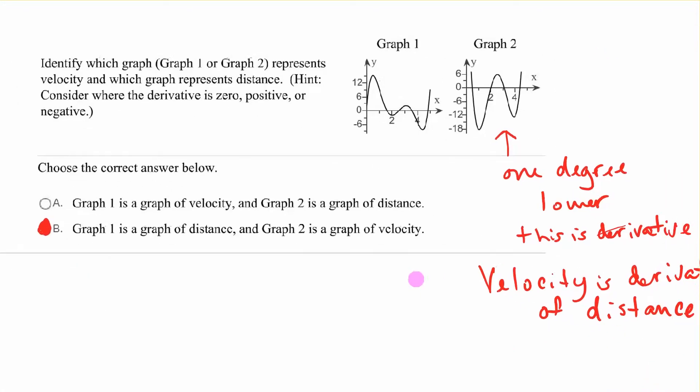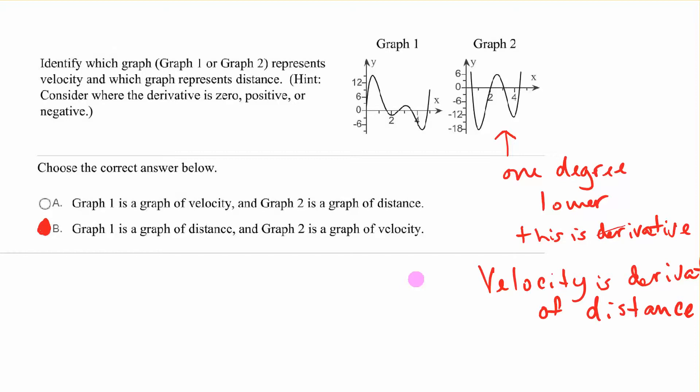Identify which graph represents velocity and which represents distance. One thing that makes it easier: your derivative is always one degree down. If we start with a second degree, our derivative is a first degree. In this one, how many turning points do we have here? We have 1, 2, 3, 4. How many here? 1, 2, 3. This one is one degree lower, so this is the derivative. Velocity is the derivative of distance. Graph 1 is a graph of distance, Graph 2 is a graph of velocity.